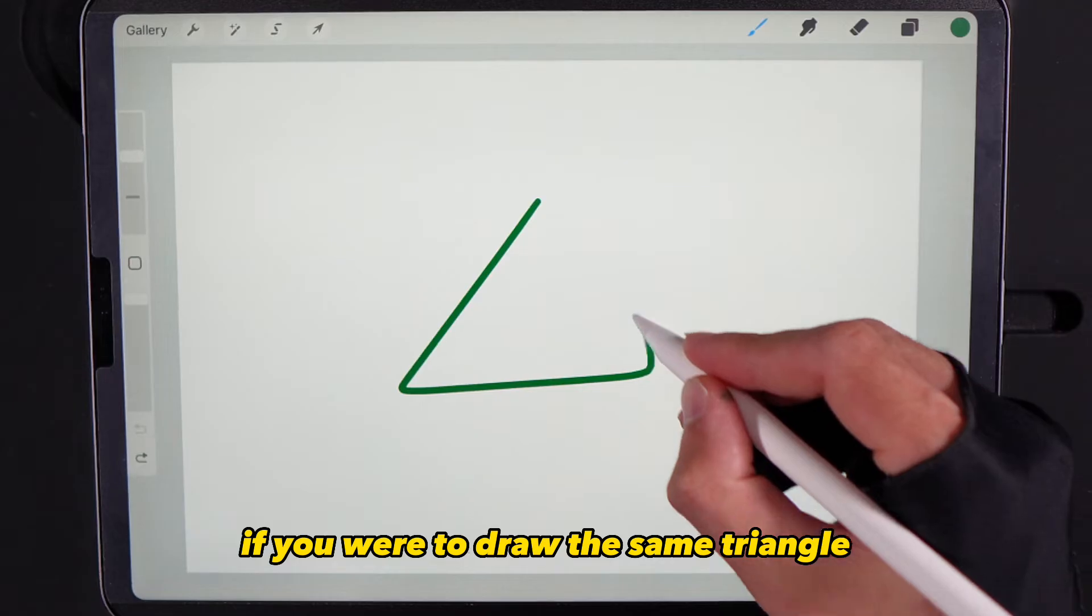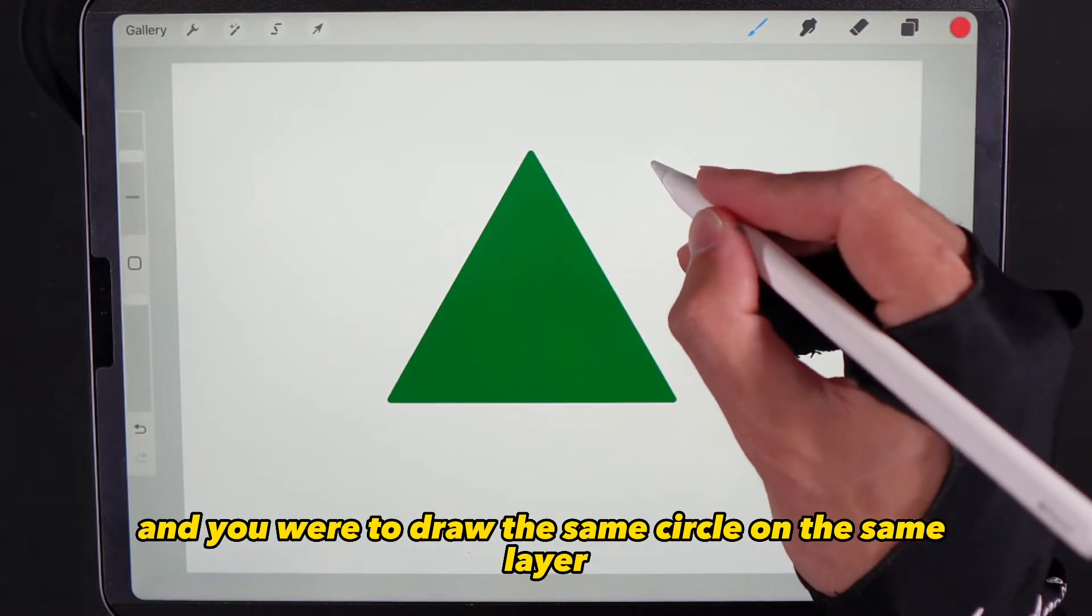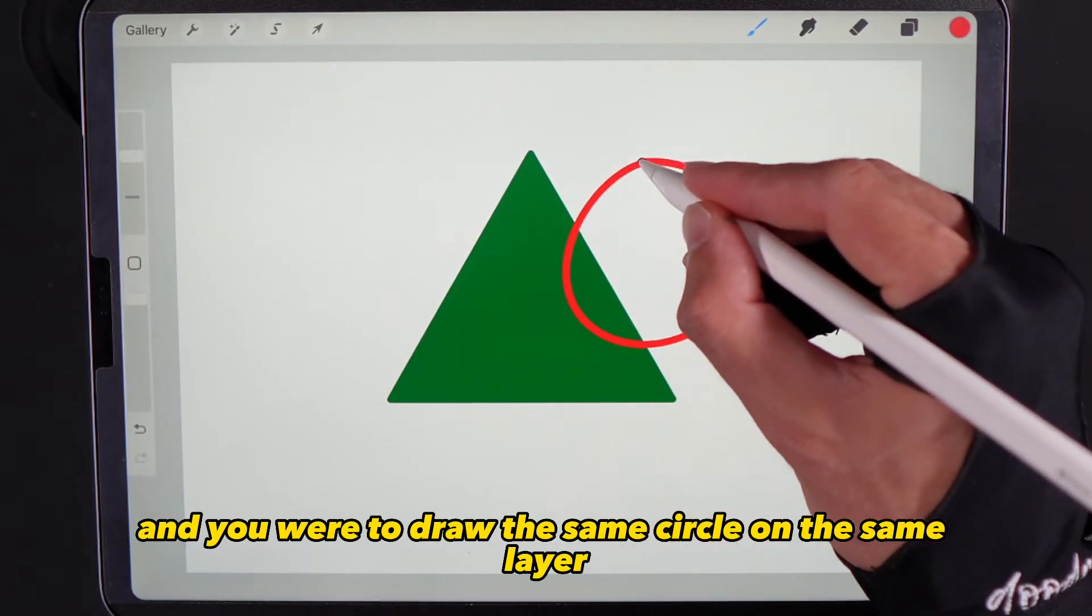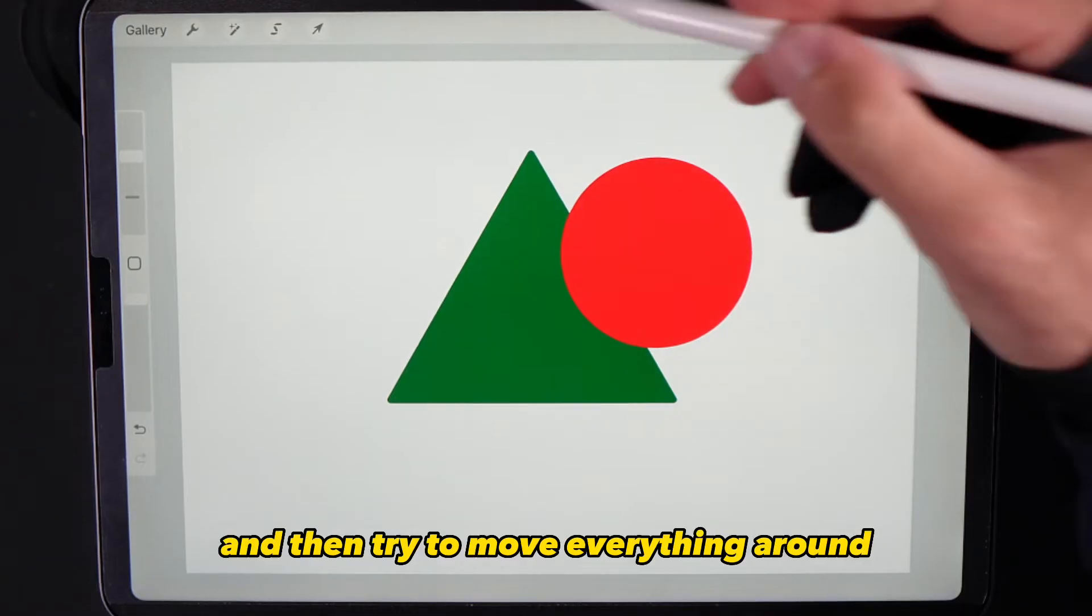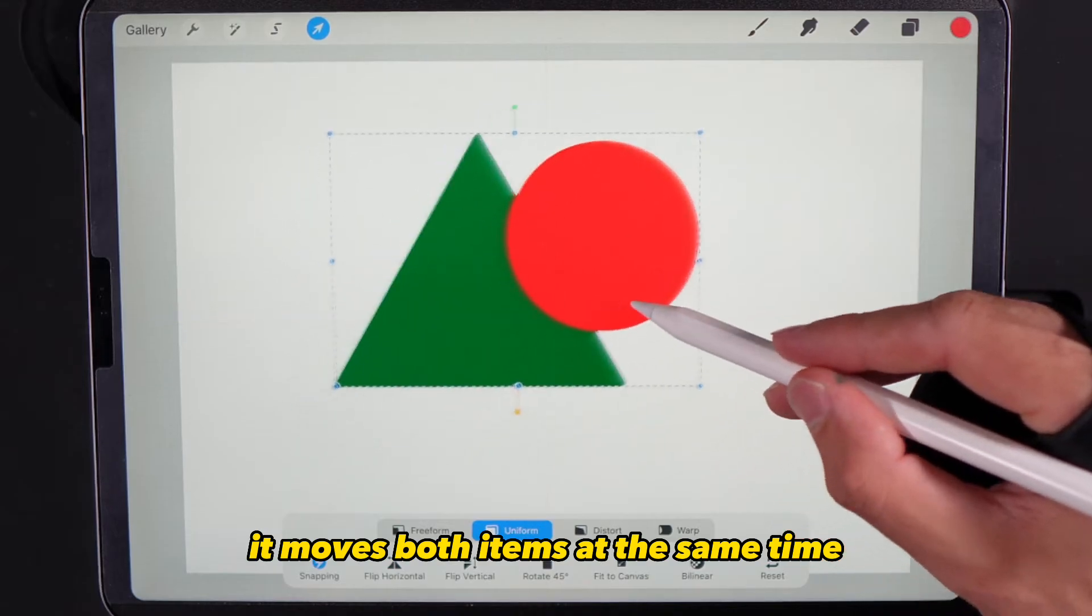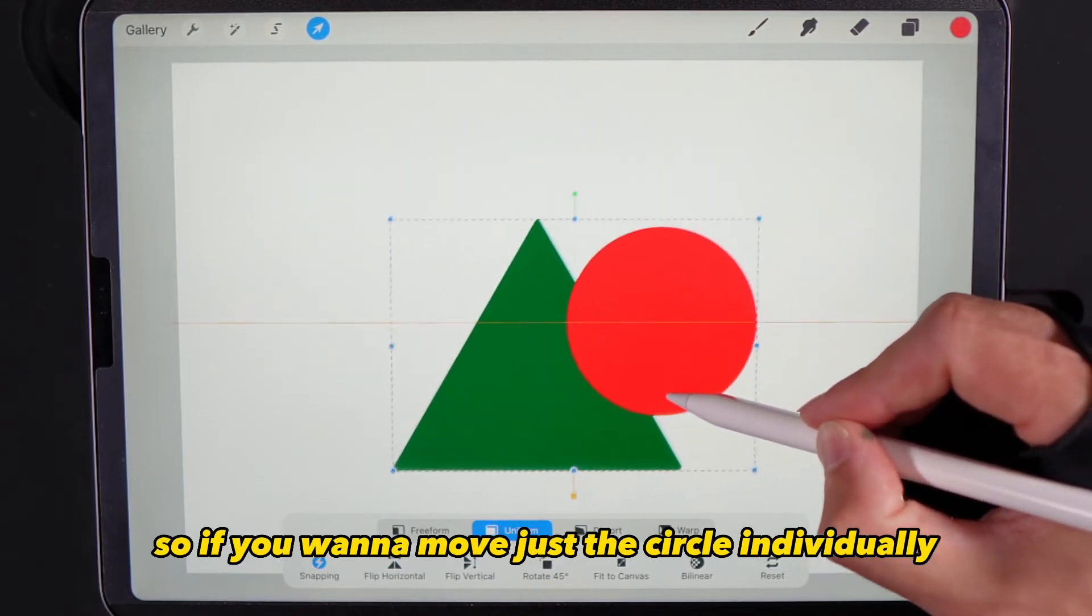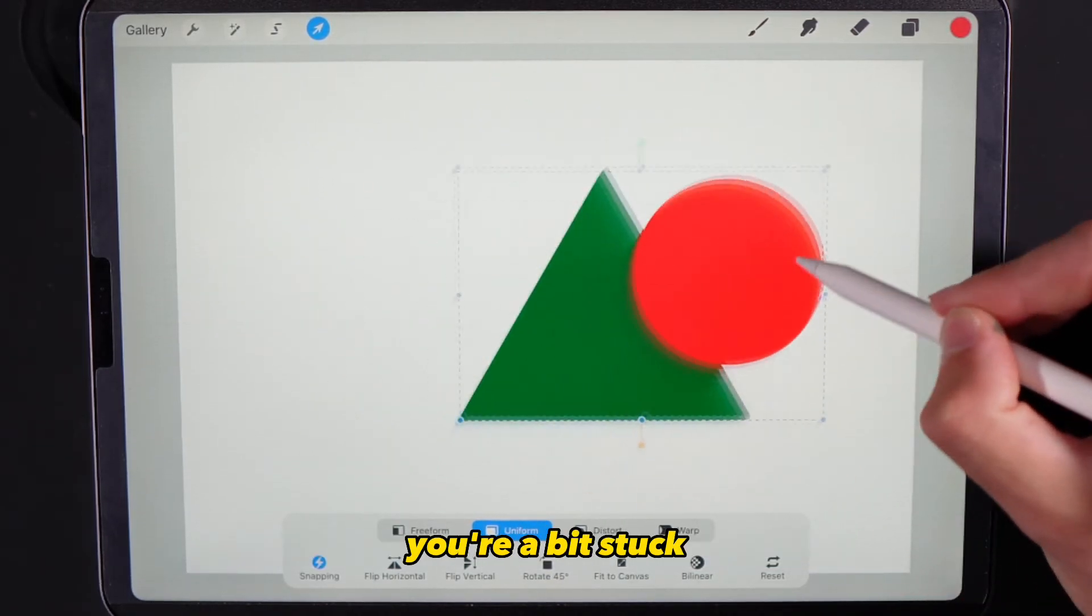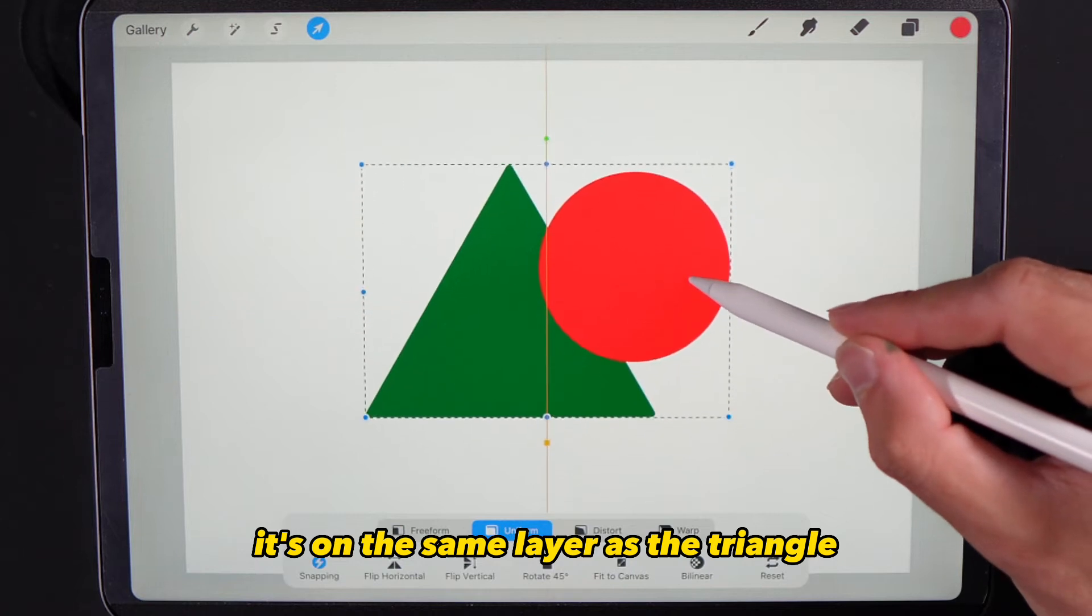Now in Procreate if you were to draw the same triangle and circle on the same layer, notice if you use your cursor and try to move everything around, because it's on one layer it moves both items at the same time. If you want to move just the circle individually you're stuck because it's on the same layer as the triangle.